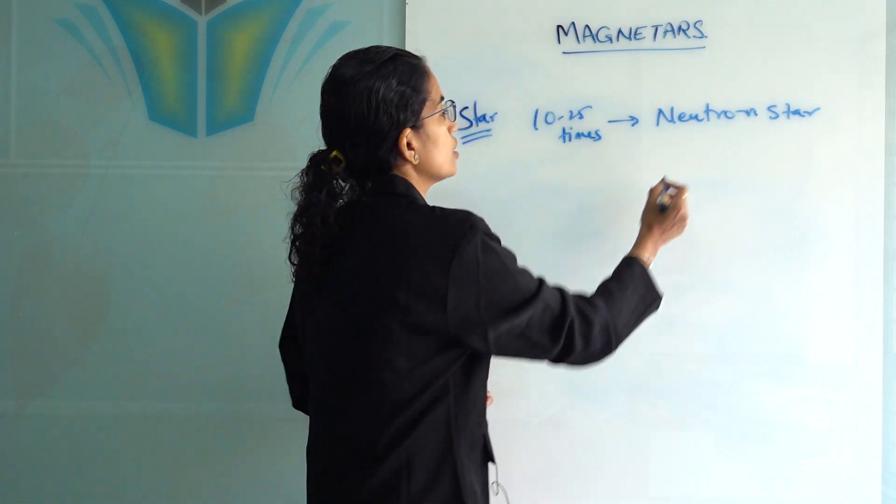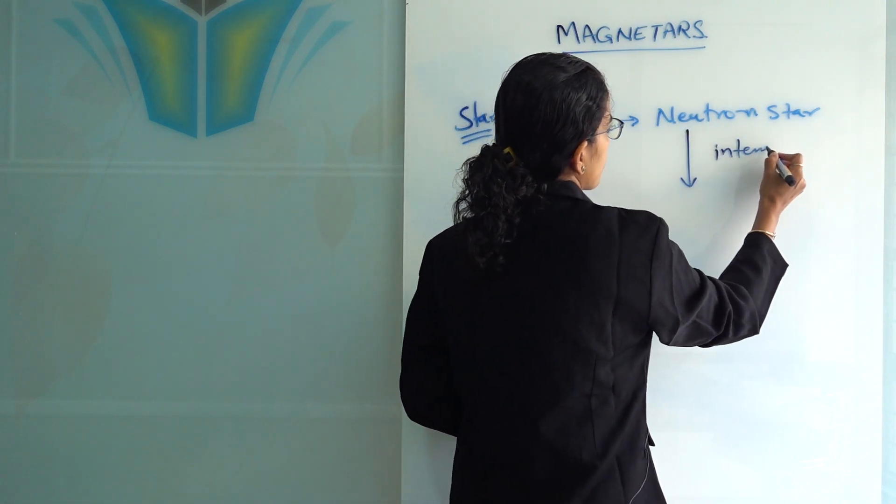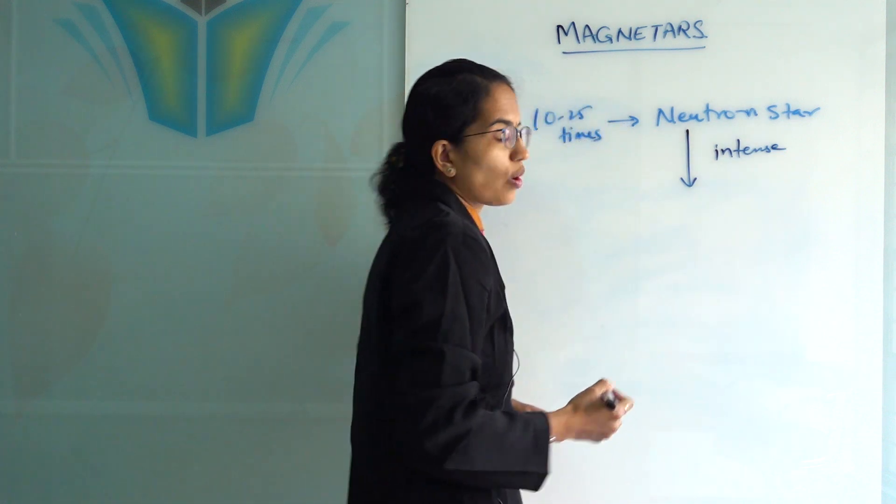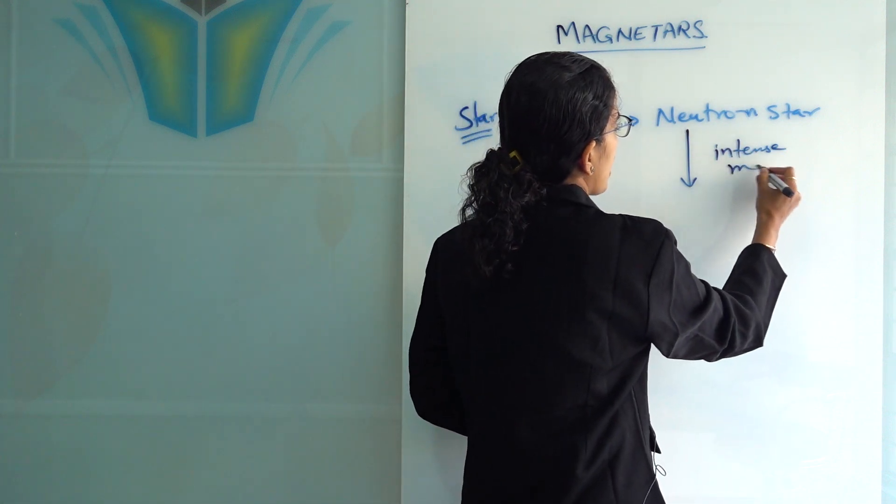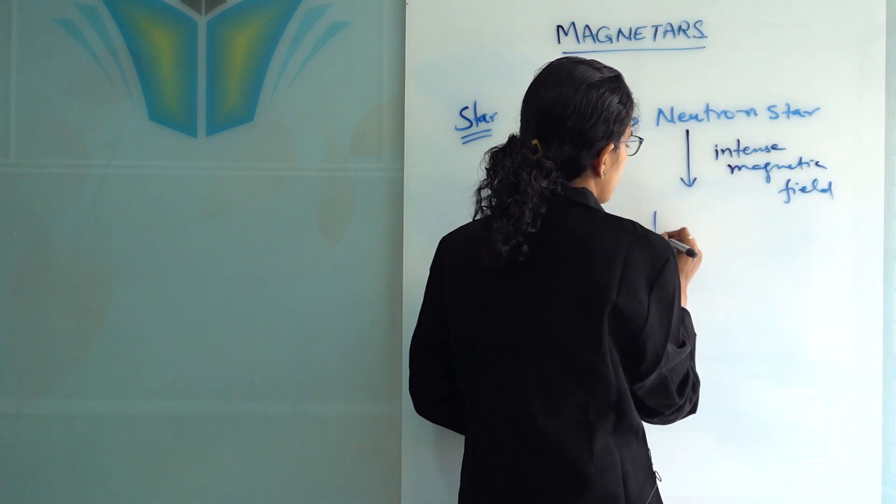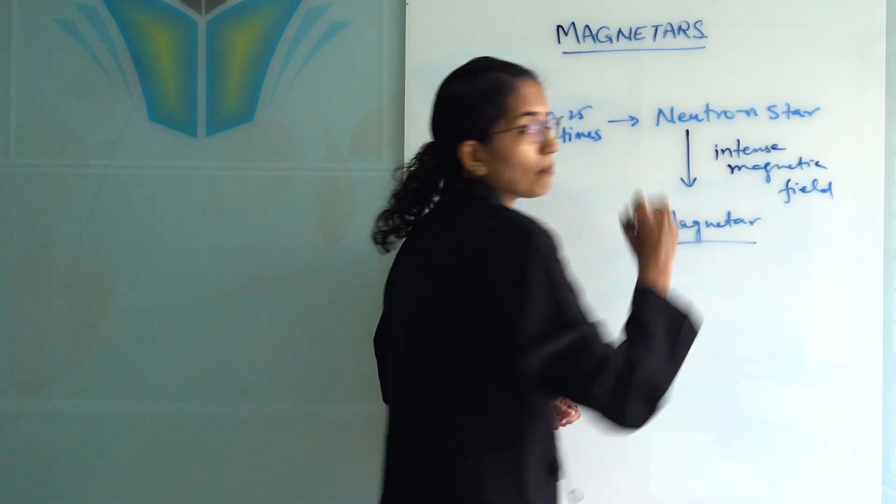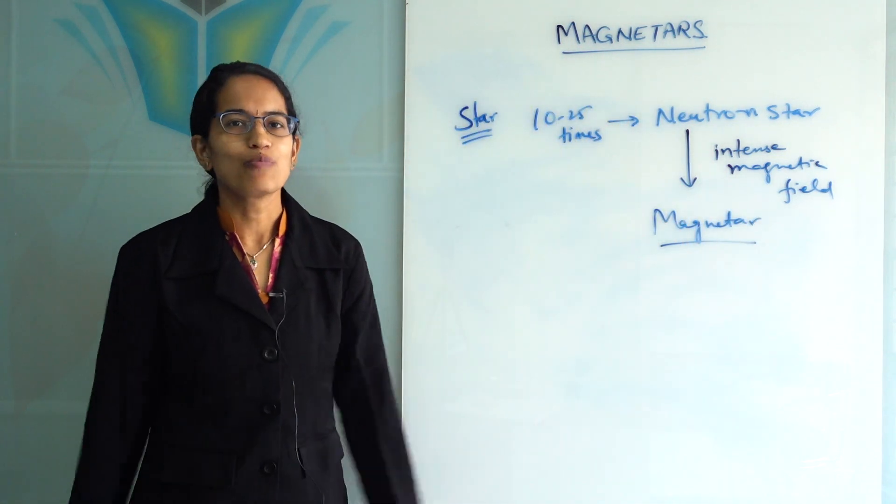What are those? Those are based on intense magnetic field. So only those neutron stars which have intense magnetic field are seen as magnetars. Now what is so interesting about magnetars? Magnetars are silent for most of their life except for the violent flares.